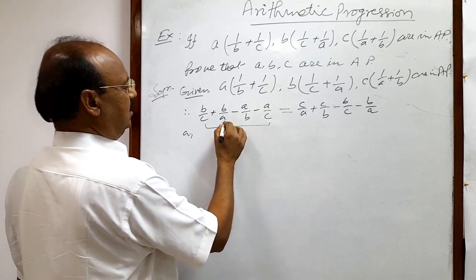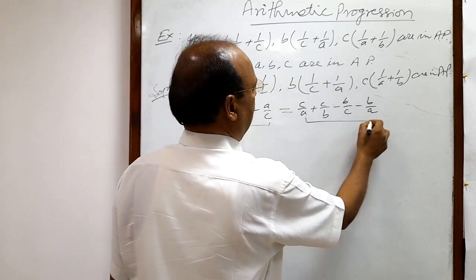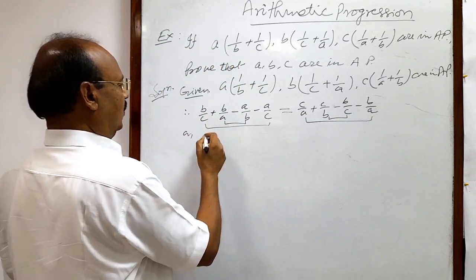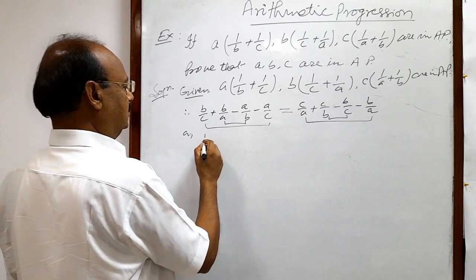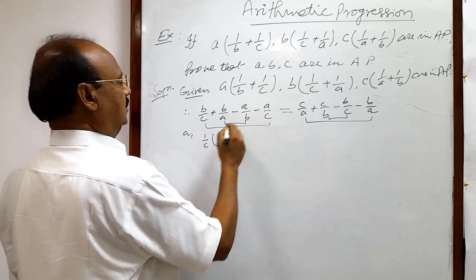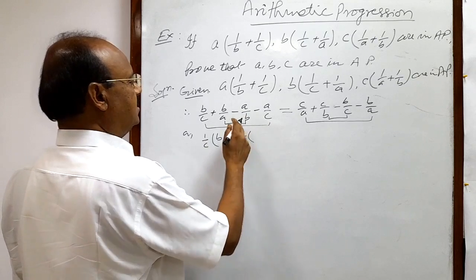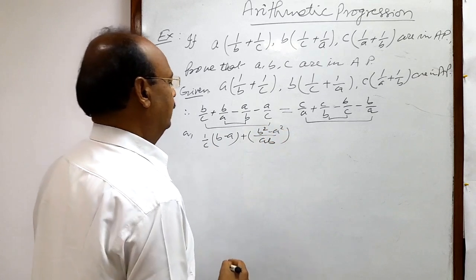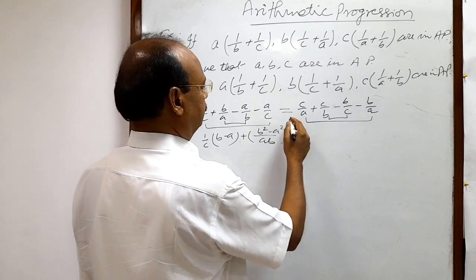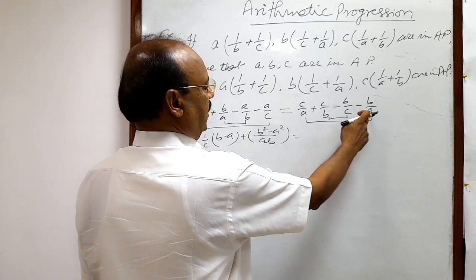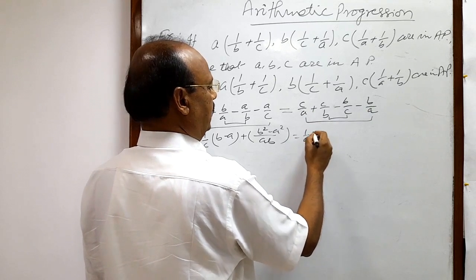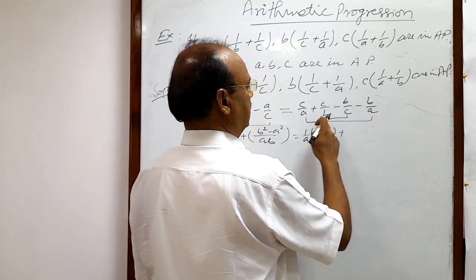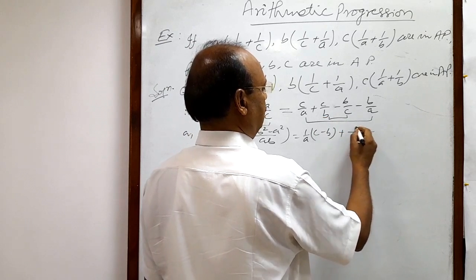Let us group these terms together. Taking 1/c common from one group gives (b - a), and the LCM for the remaining group is ab, giving (b² - a²). Similarly, taking 1/a common from the other group gives (c - b), and the LCM is bc, giving (c² - b²).